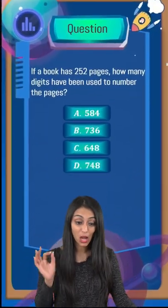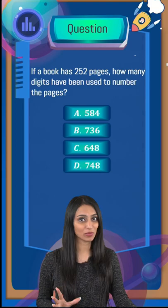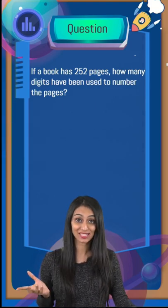If a book has 252 pages, how many digits have been used to number the pages? Four options you can see over here, so what is the right answer?